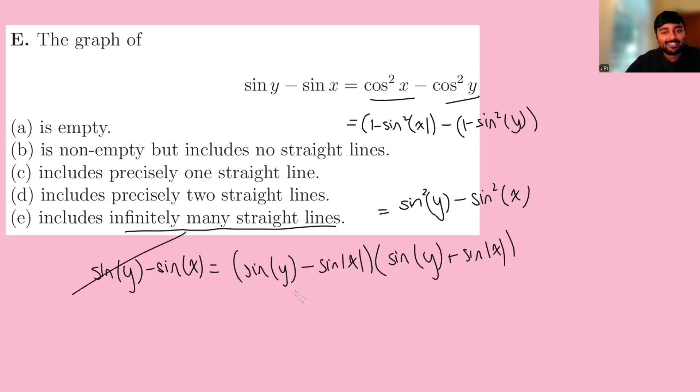And then we can cancel sine y minus sine x on both sides. No, no, we cannot. We cannot do that because this could be zero. Sine y could equal sine x, so we definitely can't cancel it because what if it's zero?